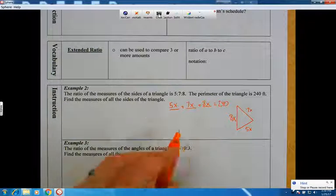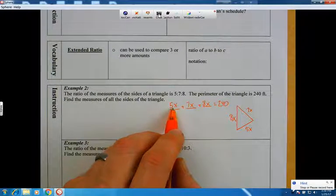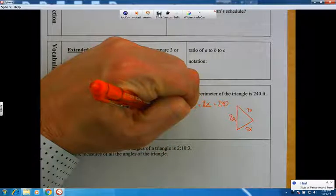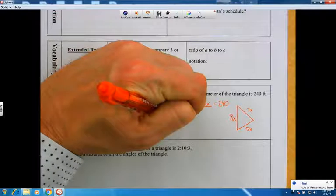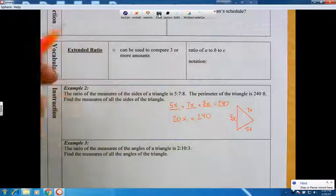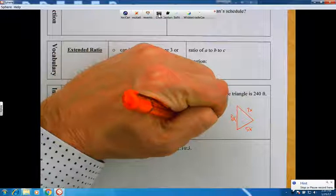Let's try to figure out what that number is. So let's solve this now. 5x and 7x makes 12x, plus another 8x is 20x. So 20x equals 240. Let's divide each side by 20.